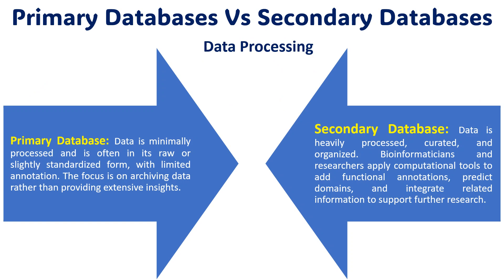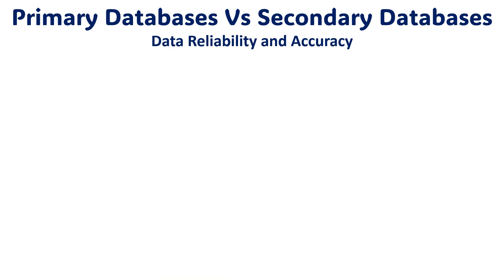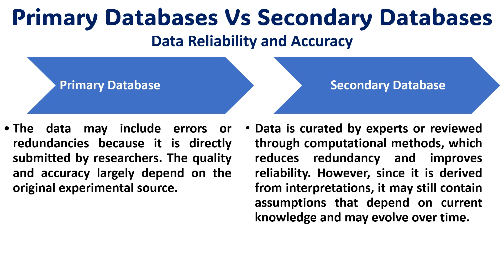Primary databases are minimally processed and in raw form, often raw and slightly annotated. Secondary databases are processed, curated, and organized — they have better and more information compared to primary databases, because the data is analyzed. Regarding reliability and data accuracy: primary databases may contain some errors and redundancies because data is directly submitted by researchers. The quality and accuracy largely depends on the original experimental sources and how the data has been generated. Secondary databases are curated by experts and reviewed through computational methods and different algorithms, which reduces redundancy and improves reliability, resulting in less redundant and more accurate data.